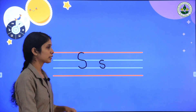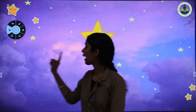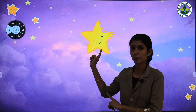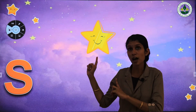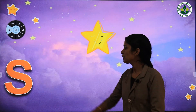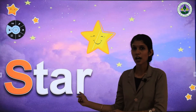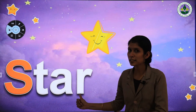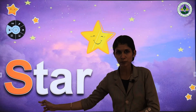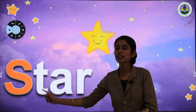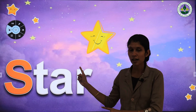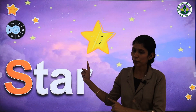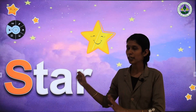Now we are going to learn some words that start with letter S. Our first word starts with letter S. Can you say what is this? Yes, it's a star. What is this? Star. Repeat after me: star. We can see stars in the sky at night, isn't it? So letter S stands for star. S is for star. Repeat after me: S is for star.